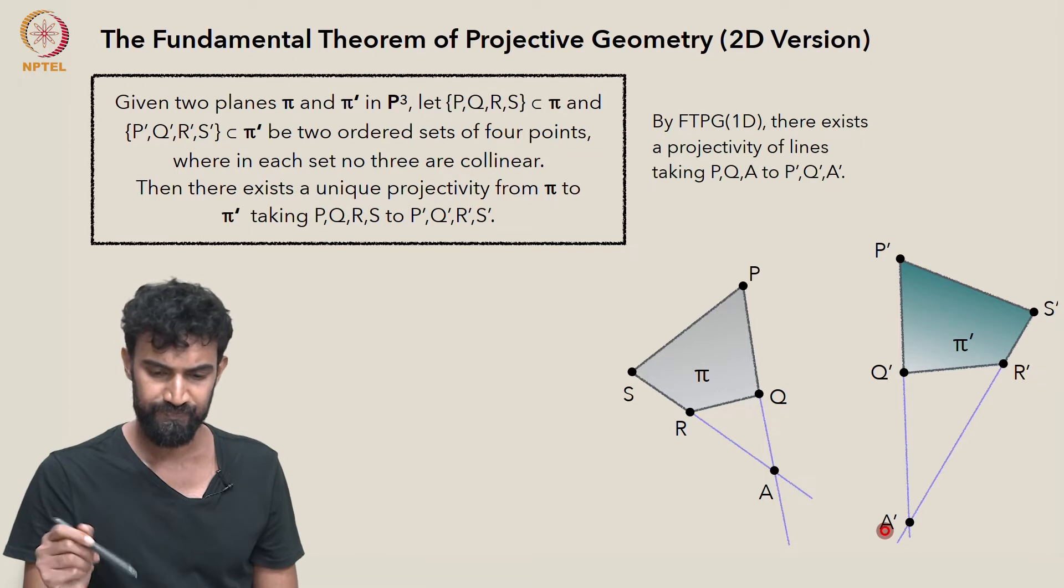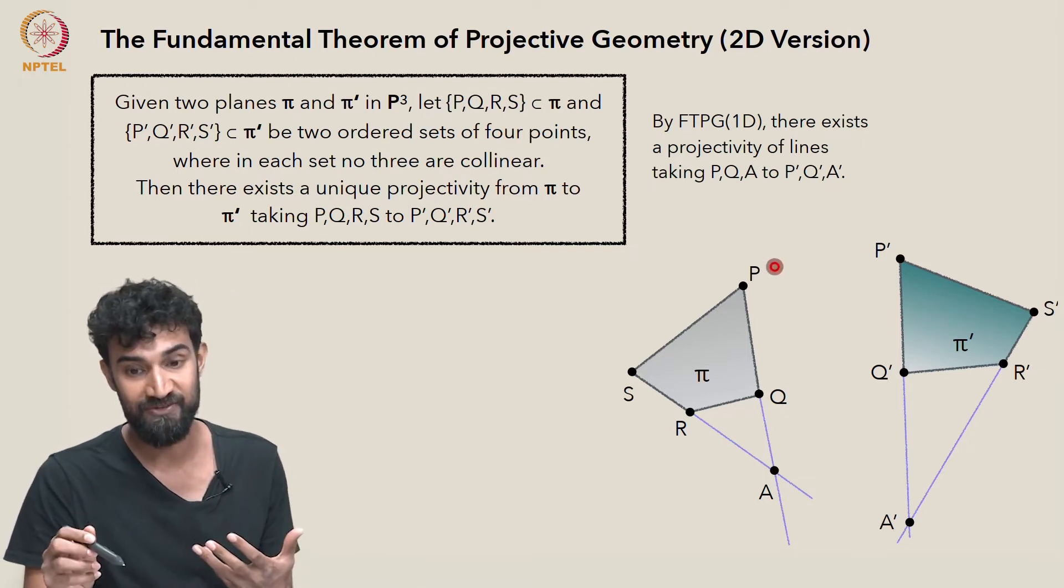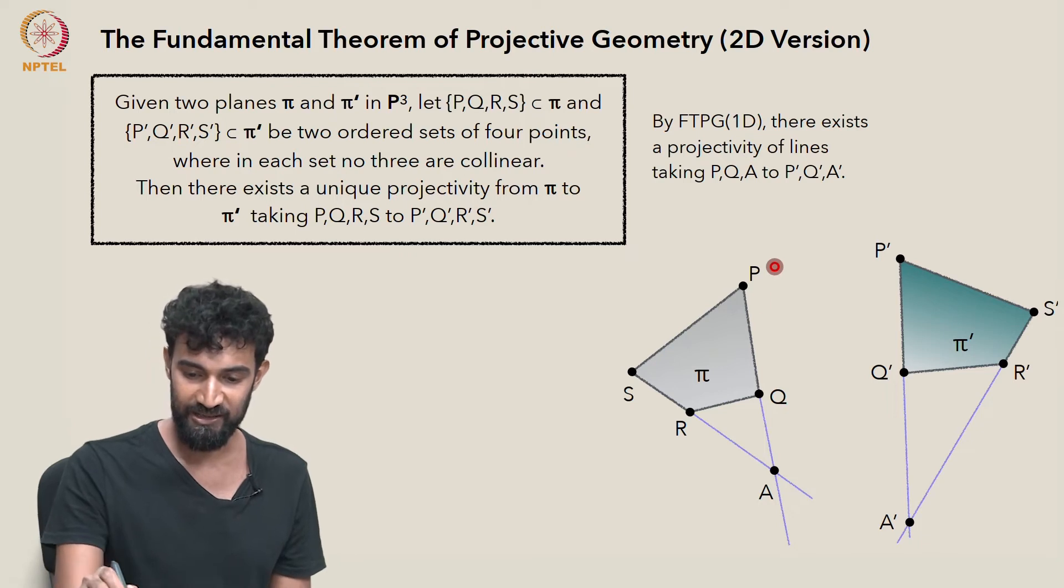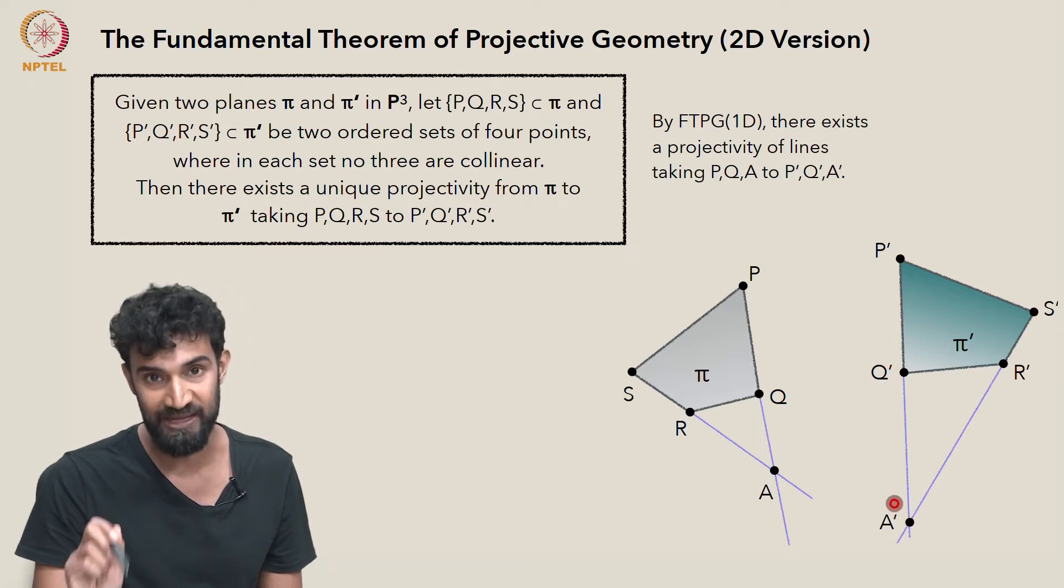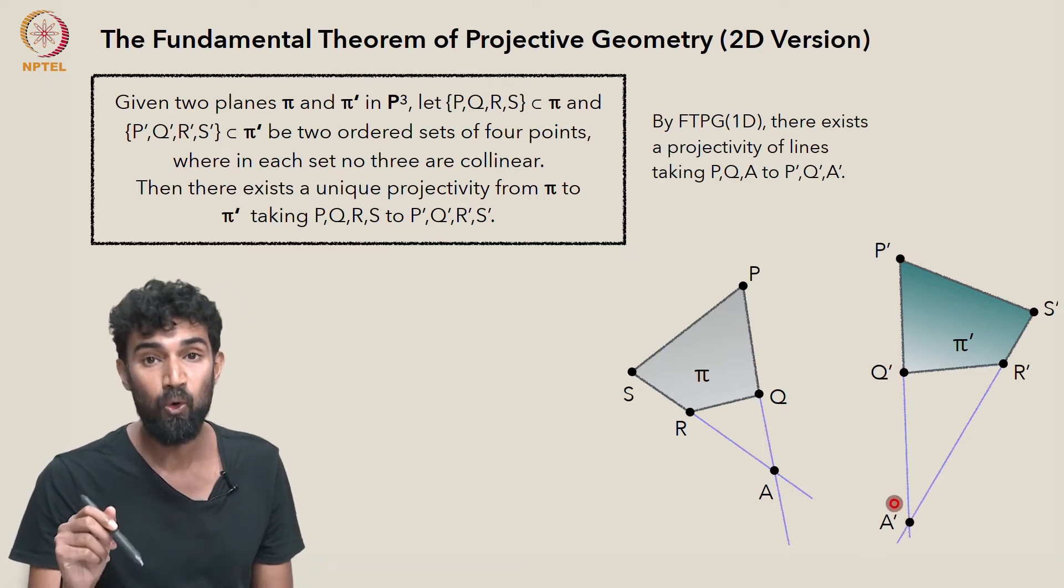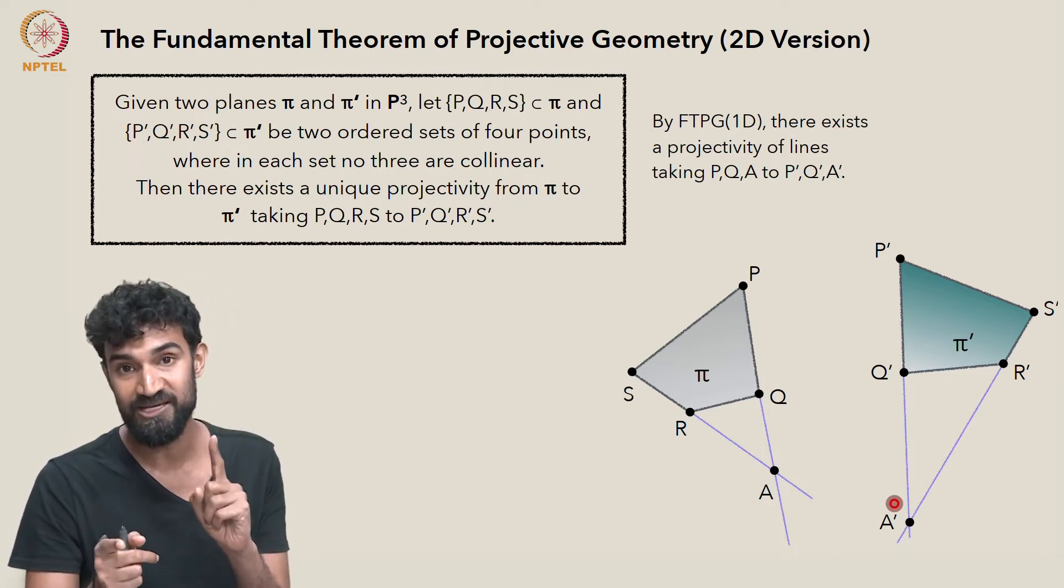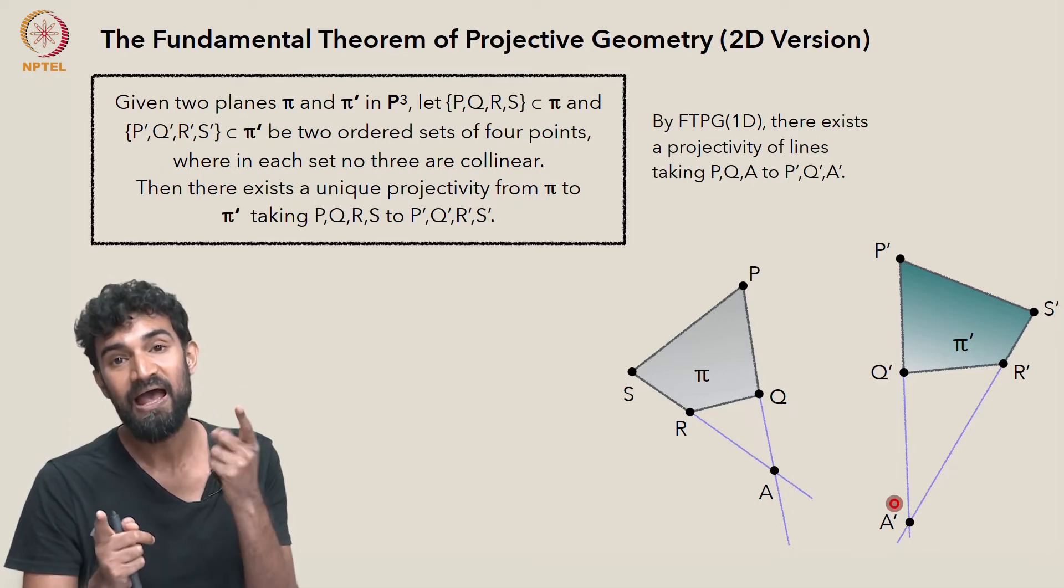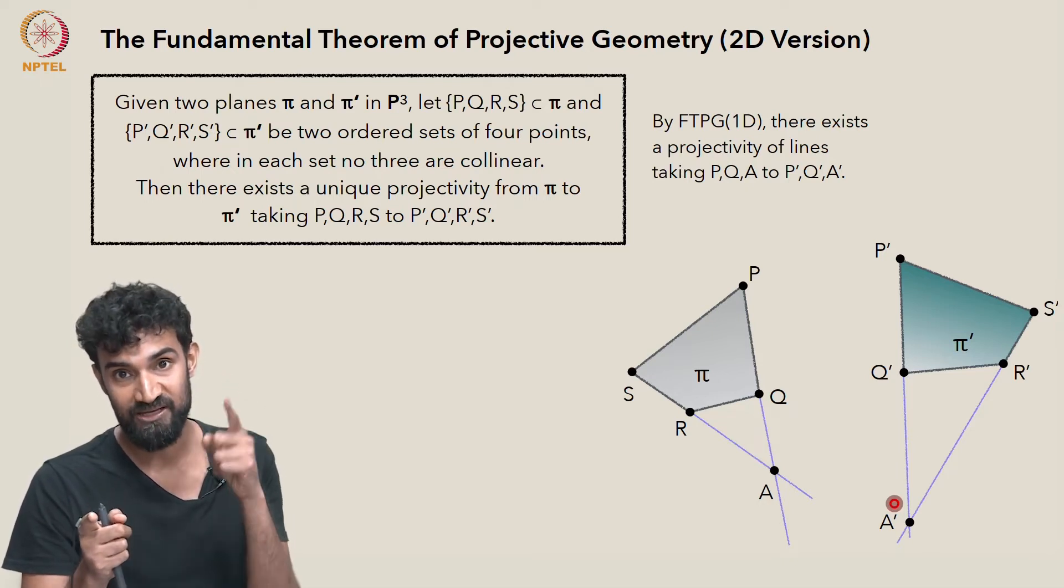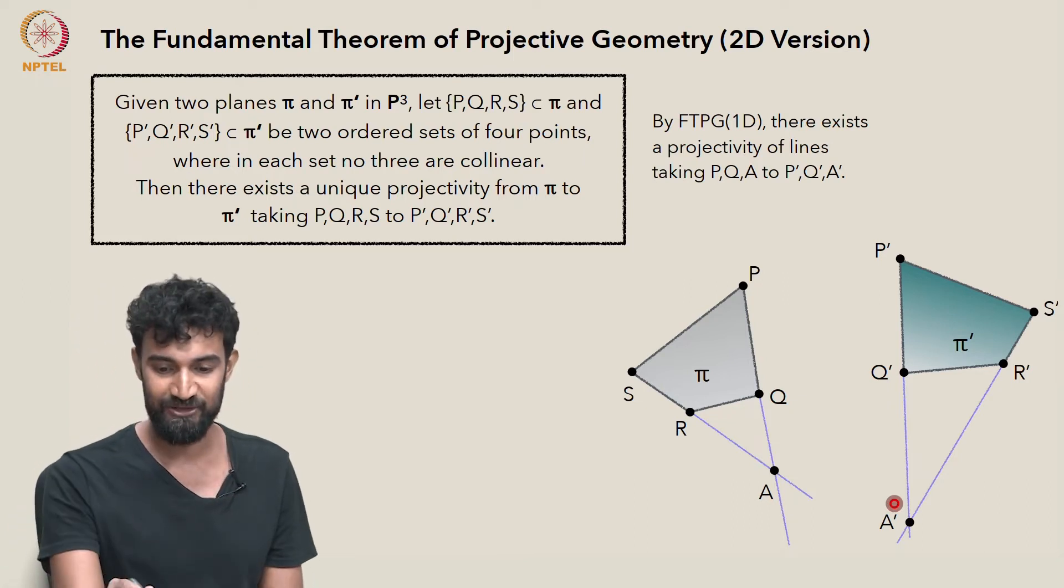By the fundamental theorem, there exists a projectivity taking P, Q, and A to P prime, Q prime, and A prime. Remember, the fundamental theorem holds in P3. Between any two lines in P3, we can take three points here and three points here, and we can find a projectivity taking these three to these three. So we're just literally applying the fundamental theorem, taking P to P prime, Q to Q prime, and A to A prime.